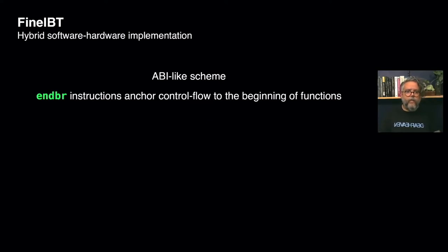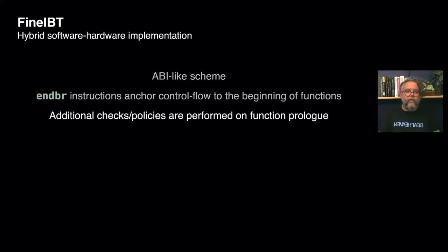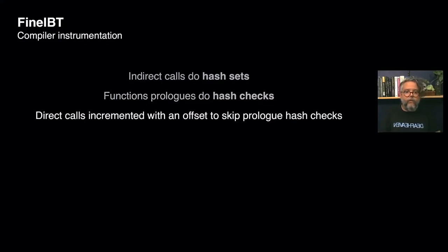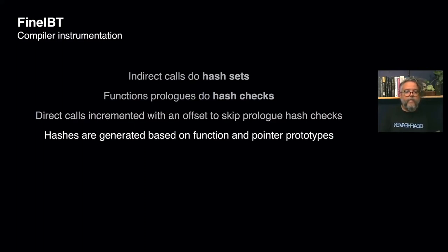Now we are ready to start exploring FineIBT. FineIBT is also an ABI-like scheme which uses end-branch instructions to anchor the control flow through the beginning of functions. Then it enforces additional policies in the function prologue. These checks consist of instrumentation emitted in the binary by the compiler. In the instrumented binary, indirect calls are augmented with hash set operations, function prologues are augmented with hash check operations, and direct calls have their targets incremented with an offset, ensuring they skip the prologue hash checks. The hashes used in these operations are generated based on function and pointer prototypes.